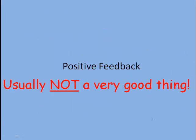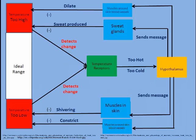So that brings us to positive feedback, which is usually not a very good thing. Positive feedback is also called a vicious cycle, because instead of correcting the situation, it actually exacerbates it — it makes it worse. So if we think about the temperature control example, the temperature begins to creep a little bit too high.